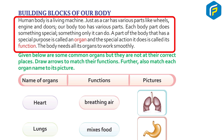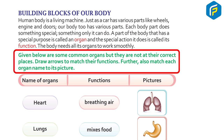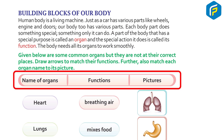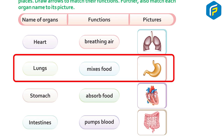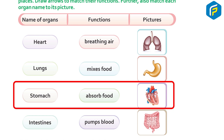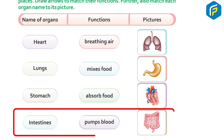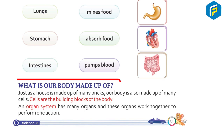The body needs all its organs to work smoothly. Some common organs and their functions: the heart pumps blood, the lungs help in breathing air, the stomach mixes food, and the intestine absorbs food.